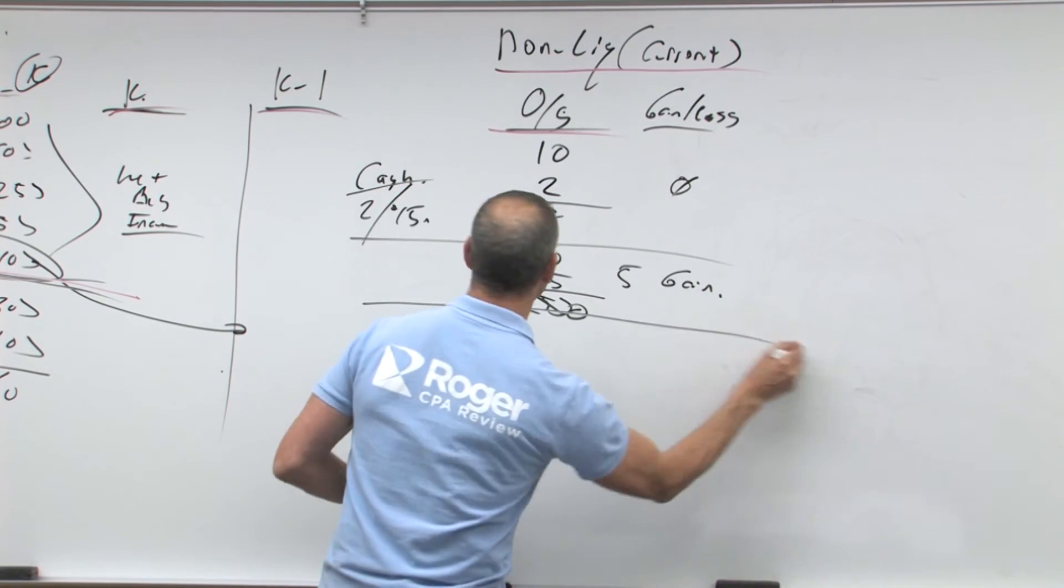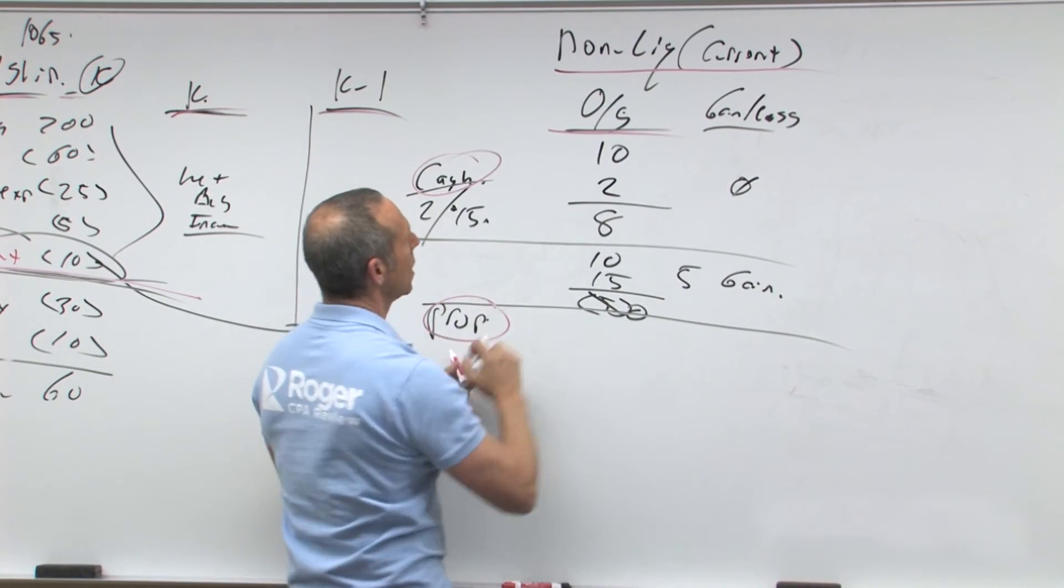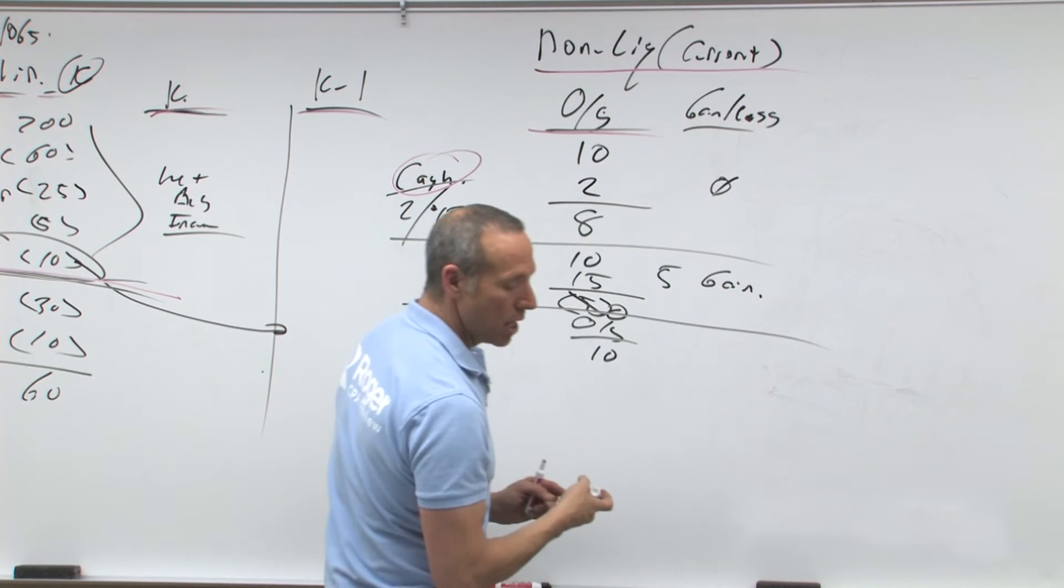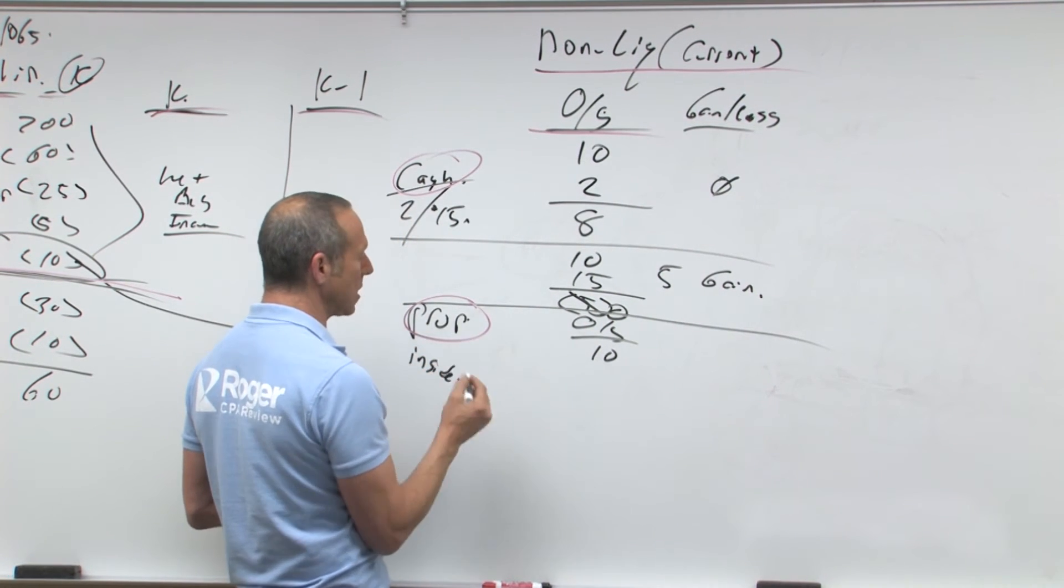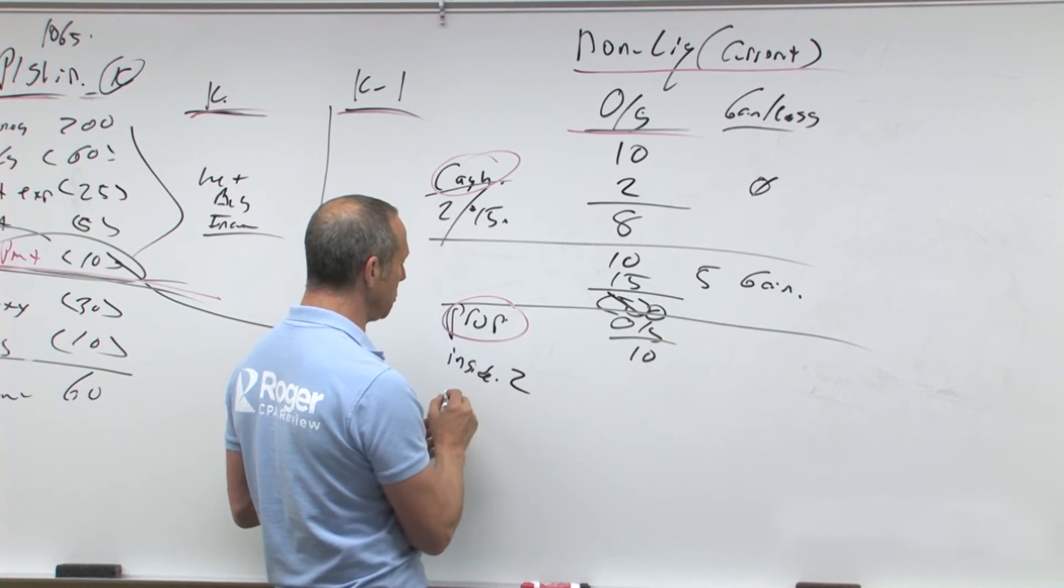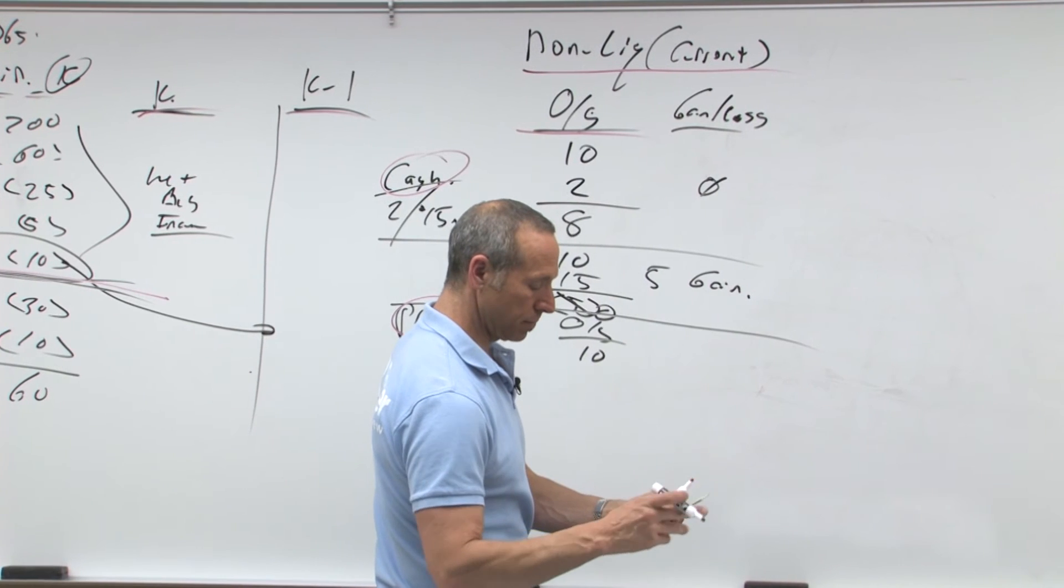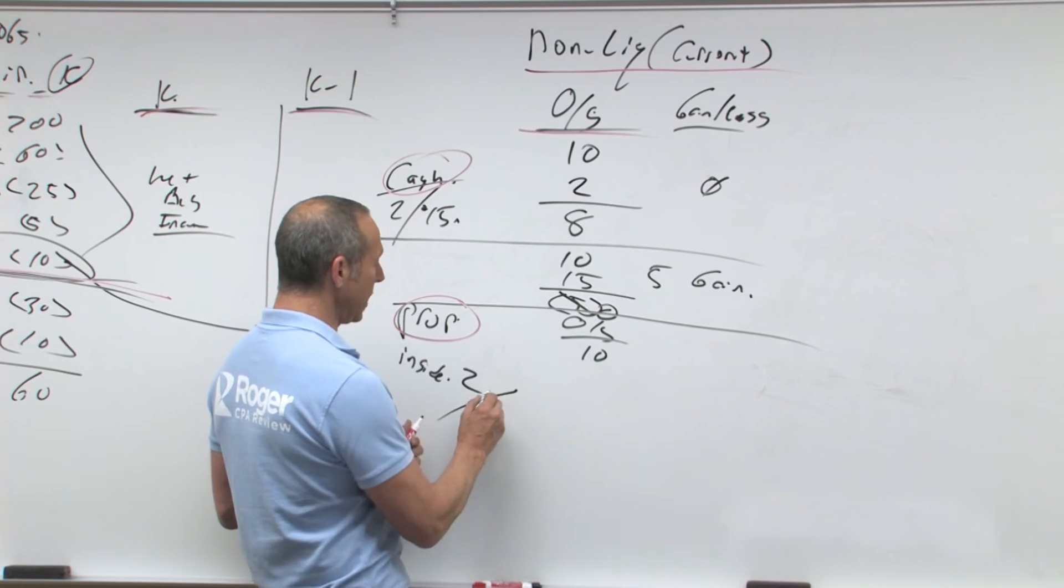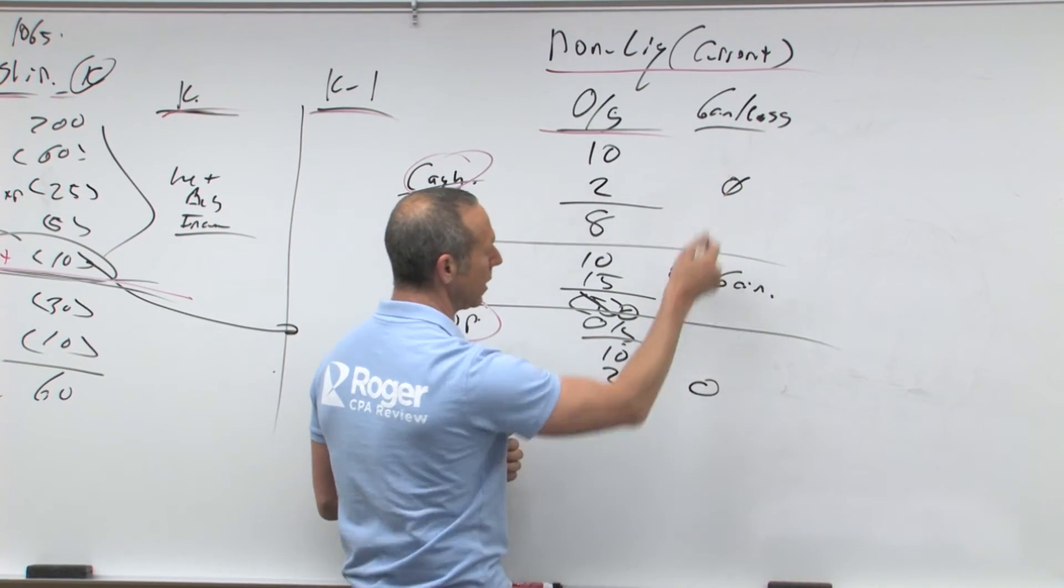Let's do property. Outside basis is 10 and I get property and let's use the same numbers. Let's say the inside basis of the property to the partnership is $2 or let's say it's $15. $2 or $15. All right. In the first case it's $2, so I'm getting the property of $2, I still have a basis left of $8, no gain or loss.